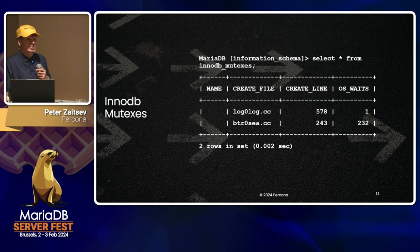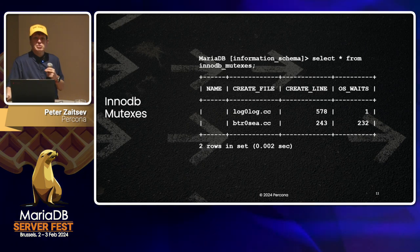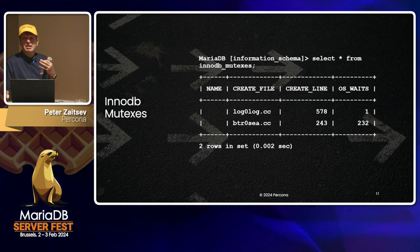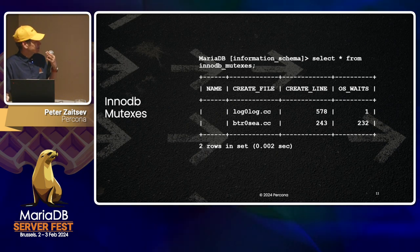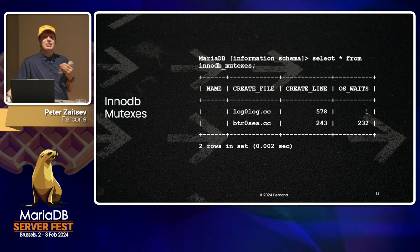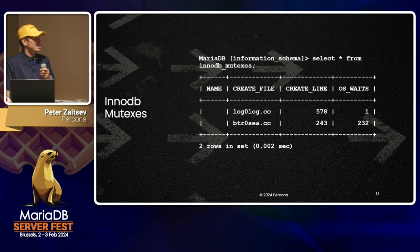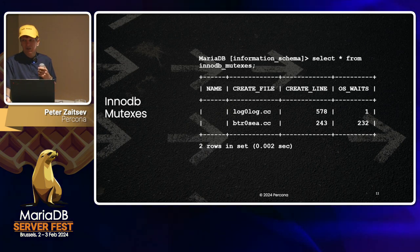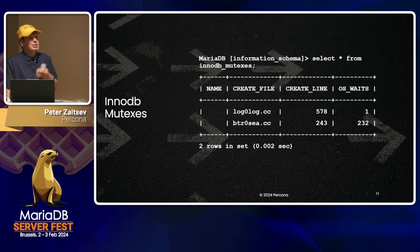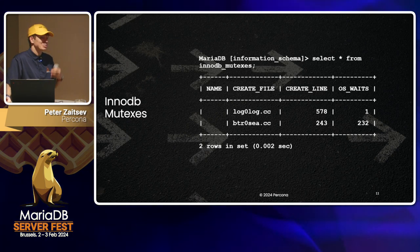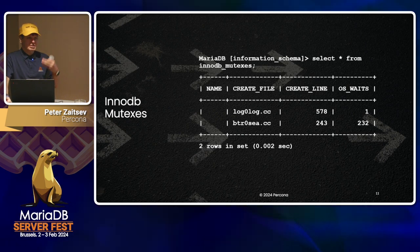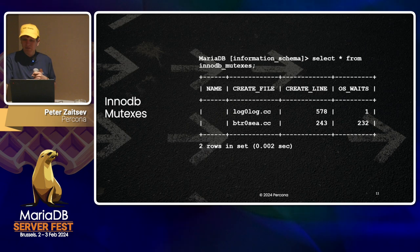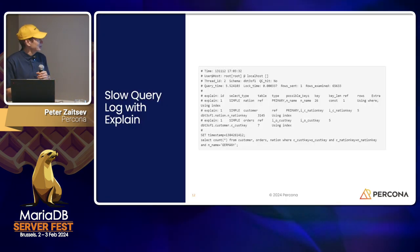Another example in the same vein is InnoDB mutexes. For someone interested in performance, especially complicated performance cases, being able to see where contention happens in the database through a very simple query is quite convenient. In MySQL and InnoDB you can do that through the Performance Schema as well, but it is much more complicated.